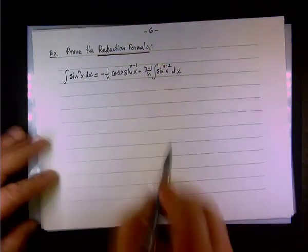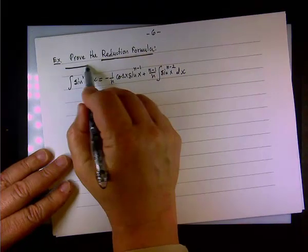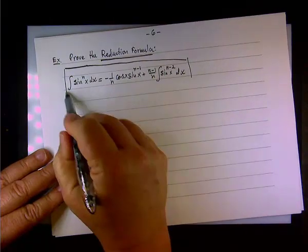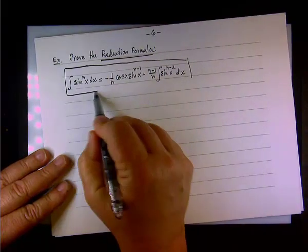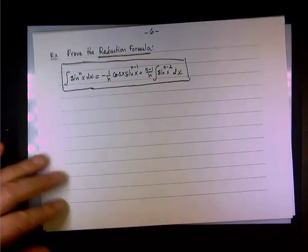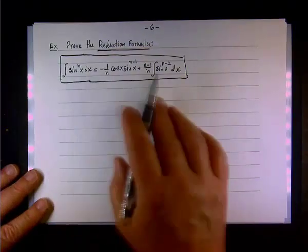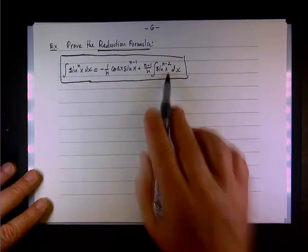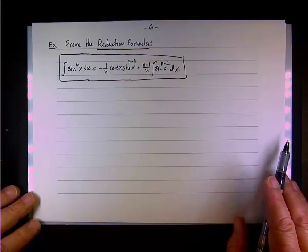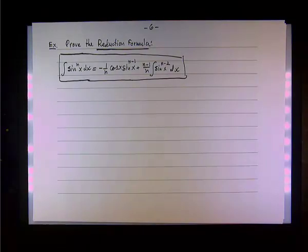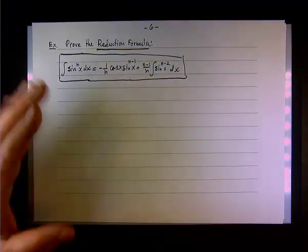So this is the reduction formula, and you can see what happens. If you have, for instance, n equal to n cubed, then you reduce it to the integral of sin x dx at the end. If you start with n equals 4, sin x to the fourth will be reduced to the integral of sin squared dx. So it allows you to reduce the power of sin by 2 degrees.